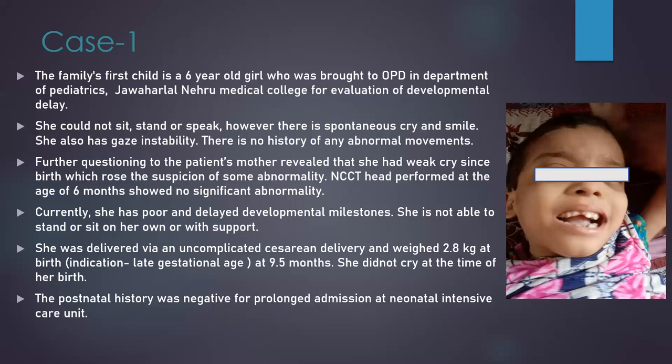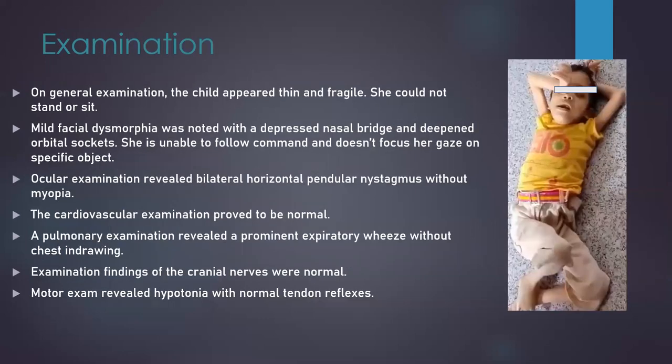The postnatal history was negative for any prolonged admission at neonatal ICU. On examining the child, she appeared thin and fragile. She could not stand or sit. Midofacial dysmorphia was noted with a depressed nasal bridge and deepened orbital sockets. Ocular examination revealed bilateral horizontal pendular nystagmus without myopia. The cardiovascular examination was normal. Pulmonary examination revealed prominent excretory base without chest in-drawing. Cranial nerve examination findings were also normal. Motor examination revealed hypotonia with normal tendon reflexes. She was advised to undergo MRI brain as the CT head at six months had come out to be normal.